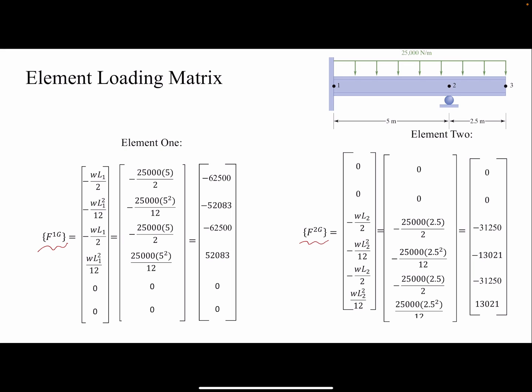For element one, I have the forces that are applying at node one: F1 and M1, and then F2 and M2. The rest would be zero because they are associated with the third node, which is not part of the first element. Remember, in a separate video I talked about finding the equivalent load on each node.